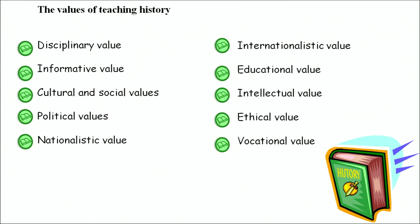Intellectual value provides students knowledge about the past and creates an intellect about right decision-making, justification, equality, and equity — the essence of the modern world. Ethical value helps children learn from the past and grow into better human beings and responsible citizens. Vocational value provided by history is uncountable; it is a vast subject which provides general knowledge to crack various senior examinations and to pursue vocations in history, archaeology, museums, and more.